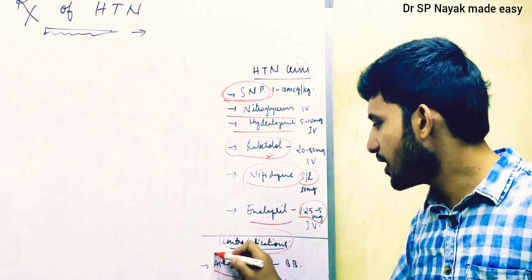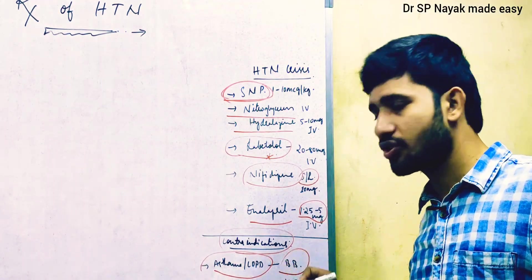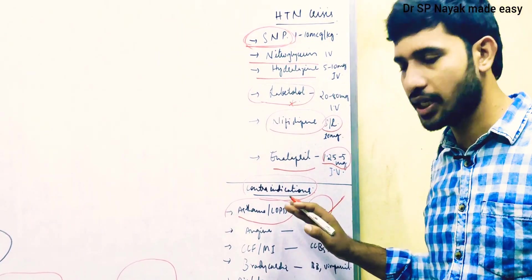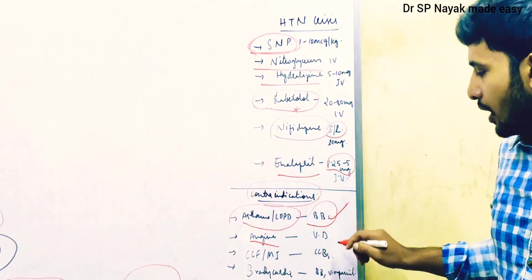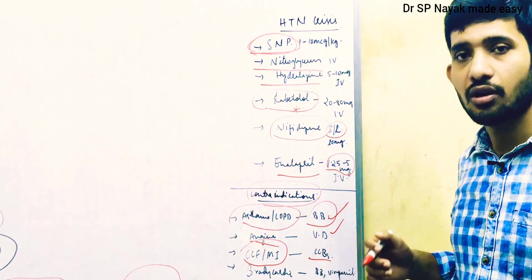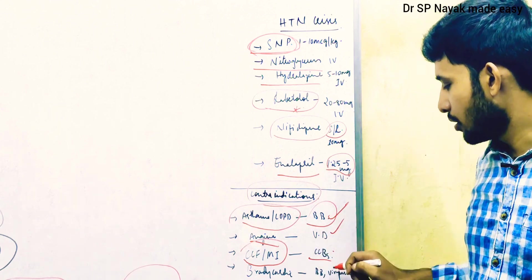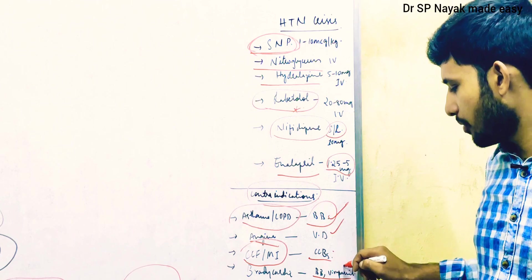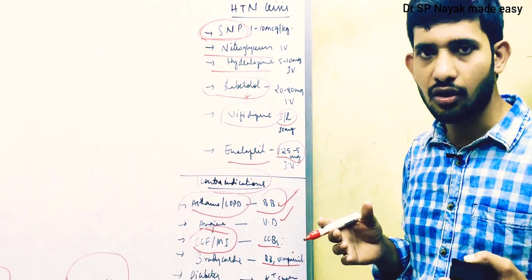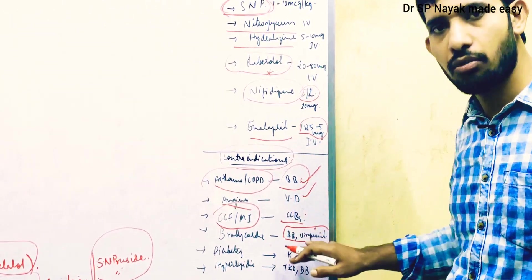Some antihypertensive drugs are strictly contraindicated in certain conditions. Asthma and COPD are major conditions associated with hypertension — in these, non-selective beta blockers like propranolol are strictly contraindicated. In angina patients, vasodilators should be contraindicated. In congestive cardiac failure and myocardial infarction, calcium channel blockers are contraindicated. In severe bradycardia, beta blockers and verapamil — a non-dihydropyridine acting mainly on the heart — are contraindicated.